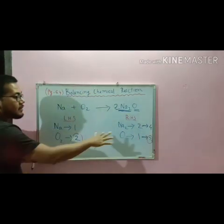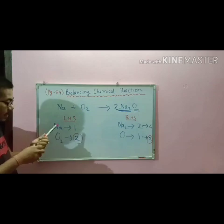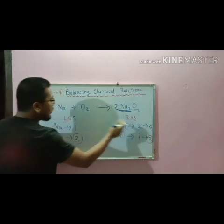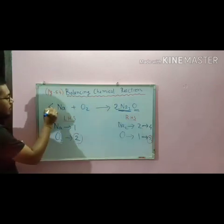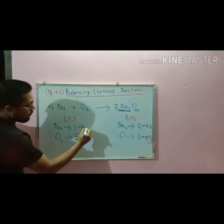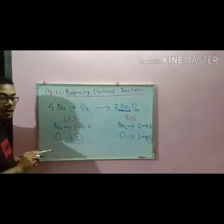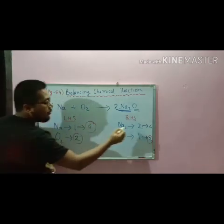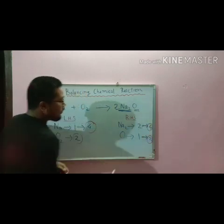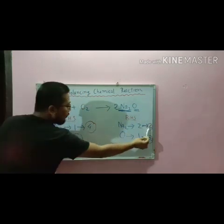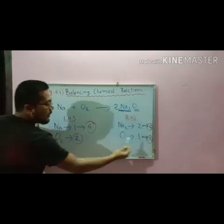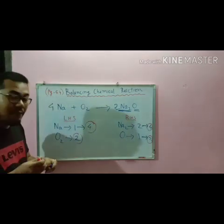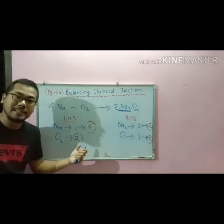That means LHS equals RHS for oxygen. But in case of sodium, here only one on LHS and four on RHS. If we write four over here, four into one is four. Now our sodium is also balanced — four equals four, two equals two. LHS equals RHS. Our chemical equation is balanced.